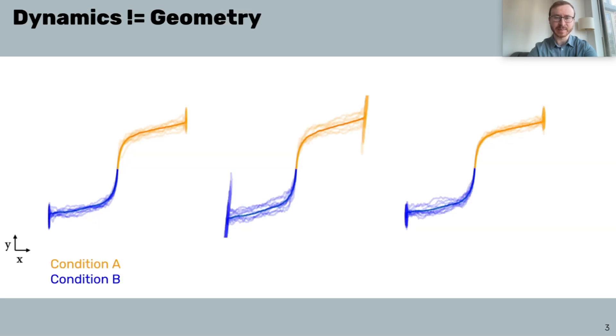And here's an example to demonstrate why this might be the case. I've plotted noisy samples from three different two-dimensional recurrent neural networks here, as well as their condition averages in the darker color. Now they look very similar geometrically, right? And so it might be reasonable to say that they are doing the same thing.